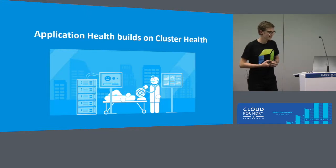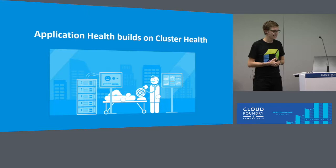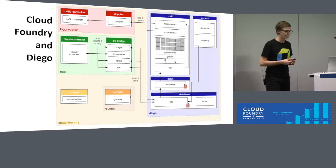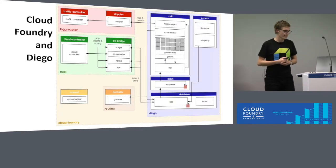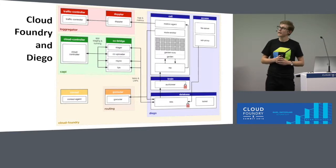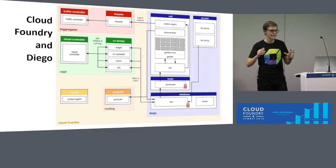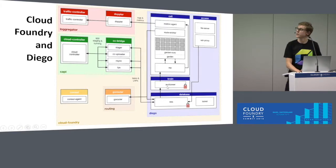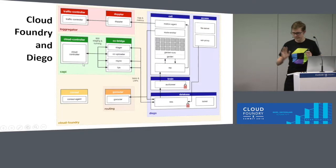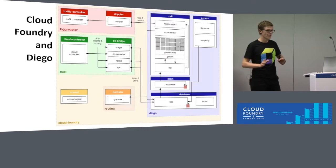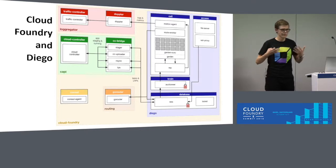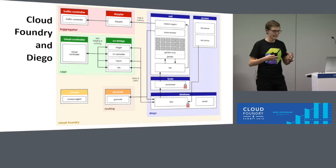This brings me back to the point that application health builds on cluster health. But what is a cluster in the context of Cloud Foundry? To answer this question, I borrowed this architectural overview from the Cloud Foundry documentation. This diagram shows each of the components and how they interact with each other — for example, the Diego cell, the Diego brain, the Diego database, and the Cloud Controller. I don't have enough time to cover all of them, but I want to show you two scenarios to give you an understanding of how the parts interact.